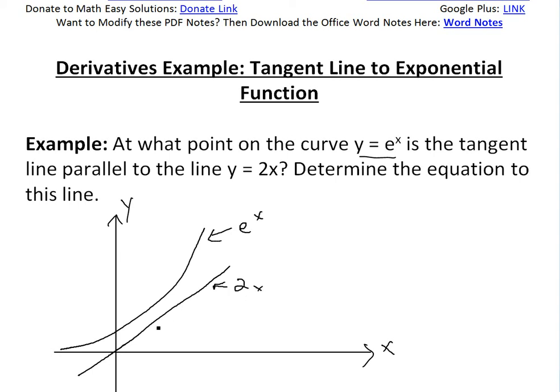It goes through the origin. If you plug in x equals 0 here, it becomes y equals 0. And then it has a rise over run or slope of 2 to 1, so every 1x you go up 2y.